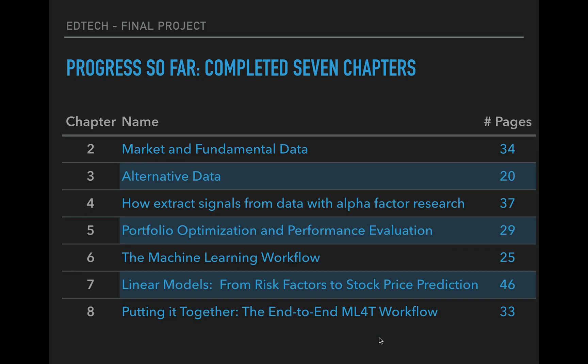So far I've worked on seven chapters — chapters two through eight — that basically cover this workflow end-to-end. The book also covers a bunch of different machine learning techniques all the way to reinforcement learning, deep learning, and natural language processing. But by covering these seven chapters, I lay out the complete end-to-end process: getting your data, training your models, coming up with a strategy, and actually testing if it works. This covers around 200 to 220 pages — a little under a third of the book.